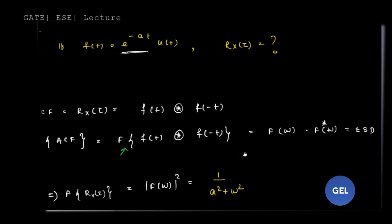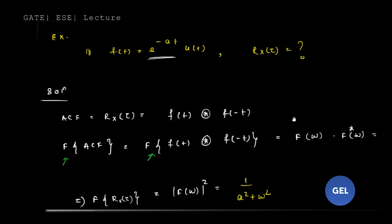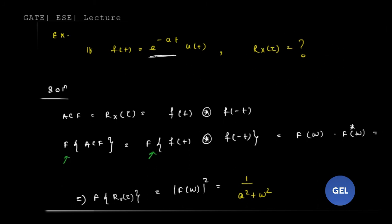Taking the Fourier transform, you get F(ω), and the convolution converts to multiplication, giving you the energy spectral density. In short, to calculate R_X(τ), find the Fourier transform of R_X(τ). The Fourier transform of R_X(τ) is nothing but |F(ω)|², which is your energy spectral density.